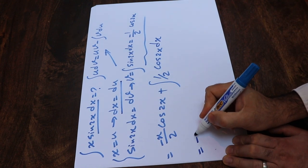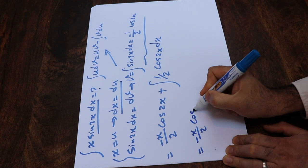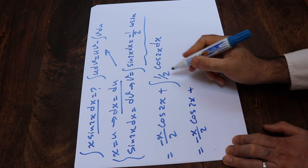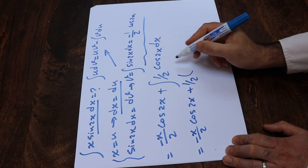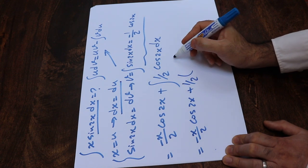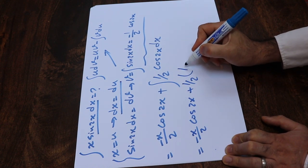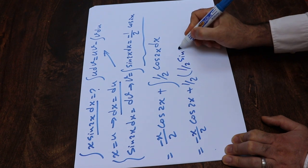Therefore, this will be equal to minus x divided by 2 cosine 2x plus that 1 divided by 2 is constant. I can take it out of the integral. And integral of cosine 2x, we know it's equal to 1 divided by 2 sine 2x.